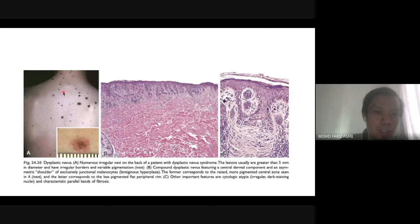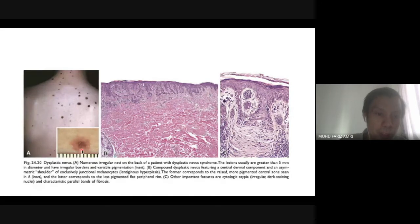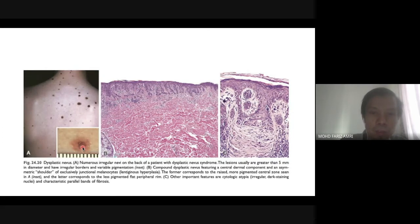Here are examples of dysplastic nevi — numerous irregular nevi on the back of a patient with dysplastic nevus syndrome. If you look closely, you can see asymmetry, color difference from light brown to darker brown, not very well-defined borders, increasing size, and increasing elevation. These are the ABCDE features of dysplastic nevi.